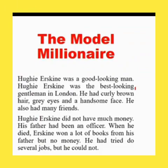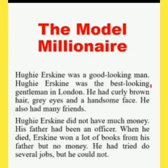Now let's come to the explanation of the chapter. Hugh Erskine was the best-looking gentleman in London. He had curly brown hair, grey eyes, and a handsome face. He also had many friends. Hugh Erskine did not have much money — his father had been an officer, and when he died, Erskine inherited many books but no money. He had tried several jobs but could not succeed. Hugh Erskine is the story's main character.